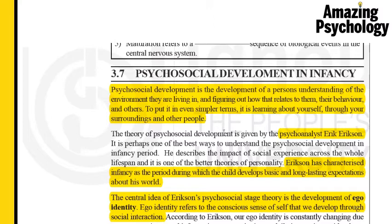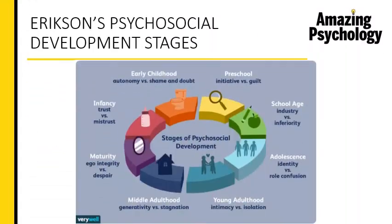Eric Erikson's theory has about eight different stages. Infancy happens to be the first stage, but there are a total of eight stages altogether. The first is the infancy stage where the main concept we will be studying is trust versus mistrust. We then move on to early childhood, preschool, school age, adolescence, young adulthood, middle adulthood, and finally maturity. For now we will be focusing on the infancy stage where the main concept studied is trust versus mistrust.